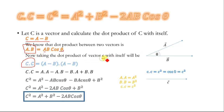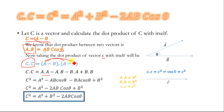Taking the dot product of vector C with itself, c dot c is equal to (a minus b) dot (a minus b). Multiplying vector a with vector a gives a dot a. Multiplying a with minus b gives minus a dot b. Similarly, following the procedure for minus b: minus b dot a, and minus b times minus b becomes plus b dot b.